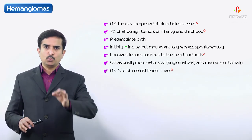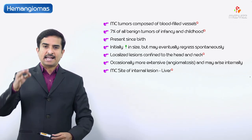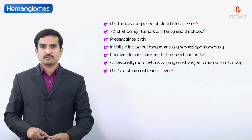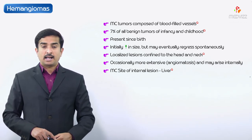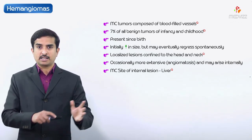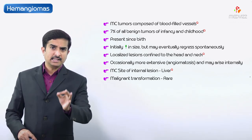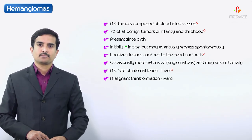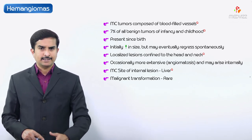Often hemangiomas are external neoplasms confined to the head and neck region. Approximately one-third of internal lesions are found in the liver, so the most common location for internal hemangiomas is the liver. These are the most common type among all vascular neoplasms, and malignant transformation of hemangiomas is extremely rare.